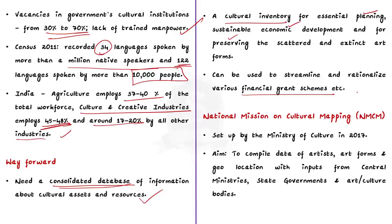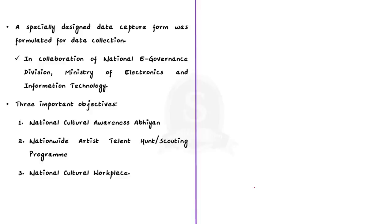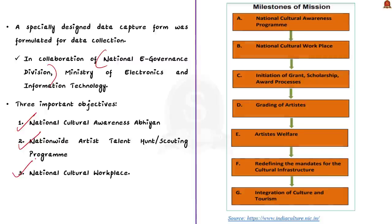The author highlights the significance of the National Mission on Cultural Mapping, set up by the Ministry of Culture in 2017. This mission aims to compile data of artists, art forms and geolocations with inputs from central ministries, state governments and art and culture bodies. A specially designed data capture form with technical collaboration of the National e-Governance Division under the Ministry of Electronics and Information Technology has been formulated for data collection. Under this mission, three important objectives are: the National Cultural Awareness Abhiyan, the Nationwide Artist Talent Hunt Scouting Process, and the National Cultural Workplace.